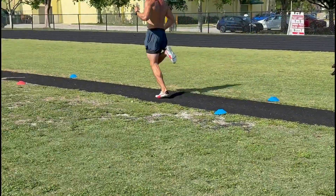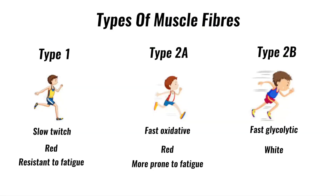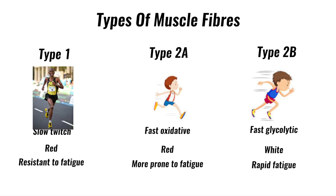Your body has different muscle fibers for different activities. There are type 1, type 2a, and type 2b. Type 1 muscle fibers use oxygen as their main form of energy and are smaller and less powerful, but can contract for very long periods. Distance runners and endurance athletes have a large amount of this muscle fiber.